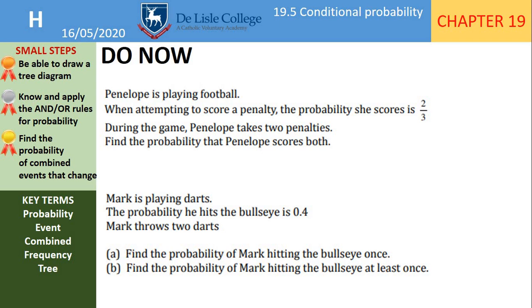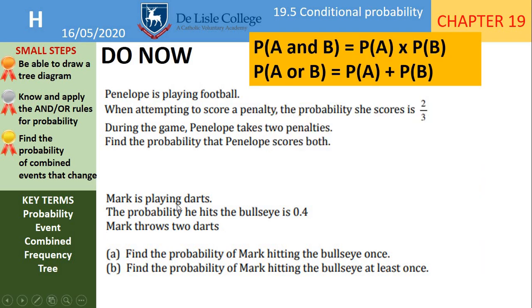So Penelope is playing football. When attempting to score a penalty, the probability she scores is two thirds. During the game, Penelope takes two penalties. Find the probability that Penelope scores both. We want her to score a penalty and score another penalty. When we want an event and another event to happen, it's the probability of the first one multiplied by the probability of the second one. So two thirds multiplied by two thirds gives an answer of four ninths.